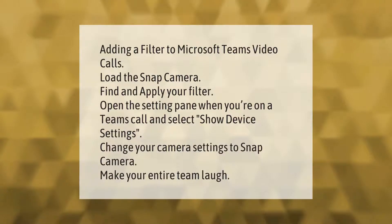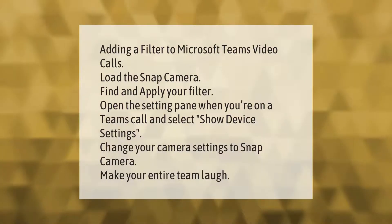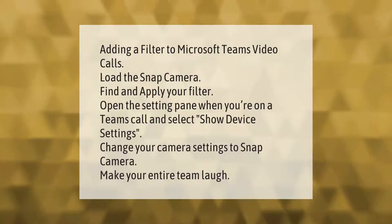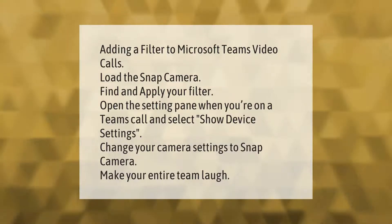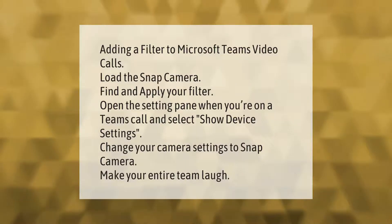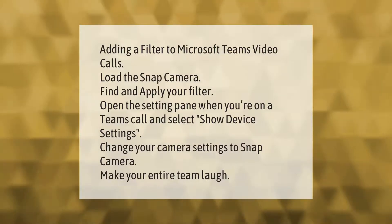Adding a filter to Microsoft Teams video calls: load the Snap Camera, find and apply your filter, open the settings pane when you're on a Teams call, and select 'Show device settings.' Change your camera settings to Snap Camera.